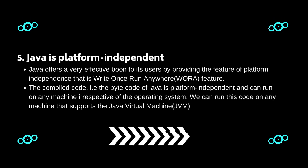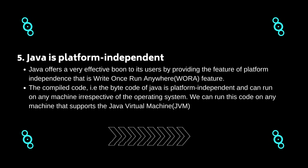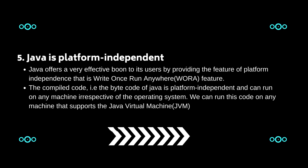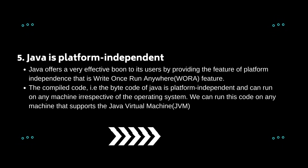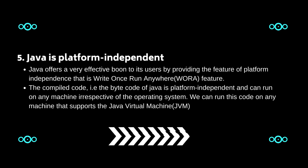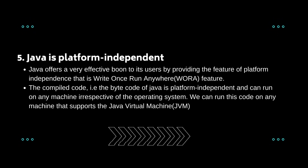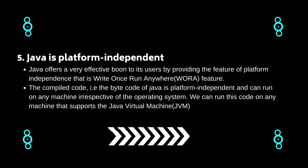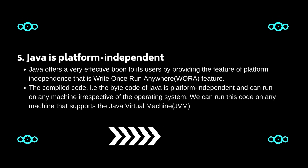Five: Java is platform independent. Java offers a very effective feature of platform independence — that is, the Write Once Run Anywhere (WORA) feature. The compiled code, i.e., the bytecode of Java, is platform independent and can run on any machine irrespective of the operating system. We can run this code on any machine that supports the Java Virtual Machine (JVM).